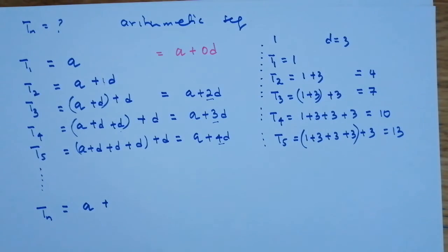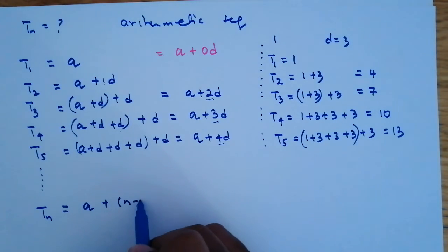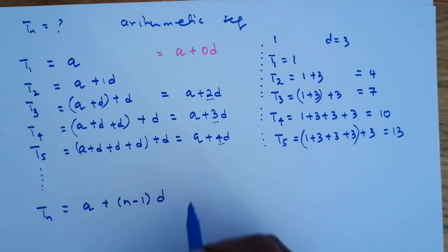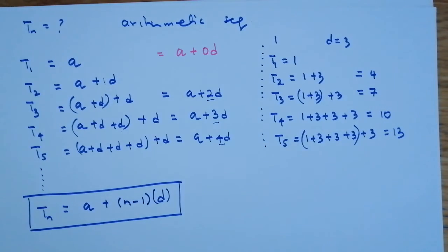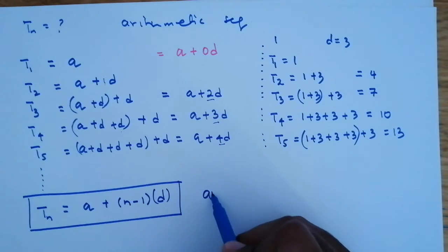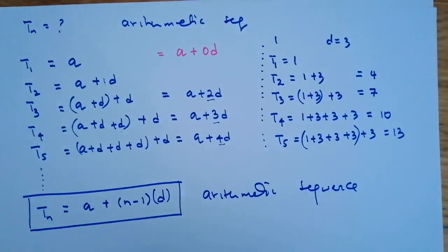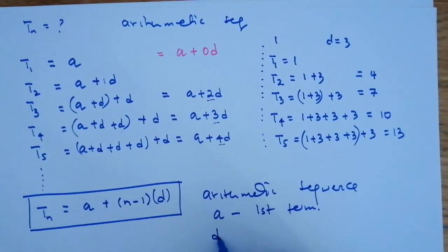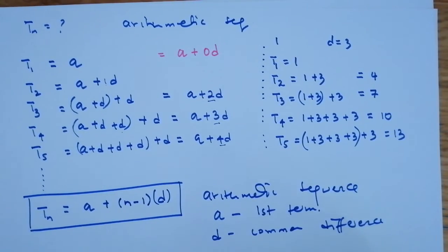So the general nth term is going to be a plus (n minus 1)d — you can also put 'd' in brackets. This is the general term, the nth term for an arithmetic sequence. Where 'a' is the first term, and 'd' is the common difference, also called the constant difference.